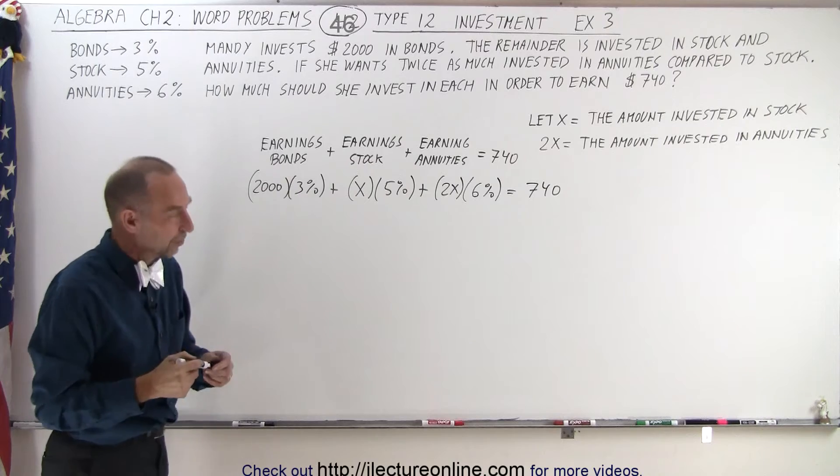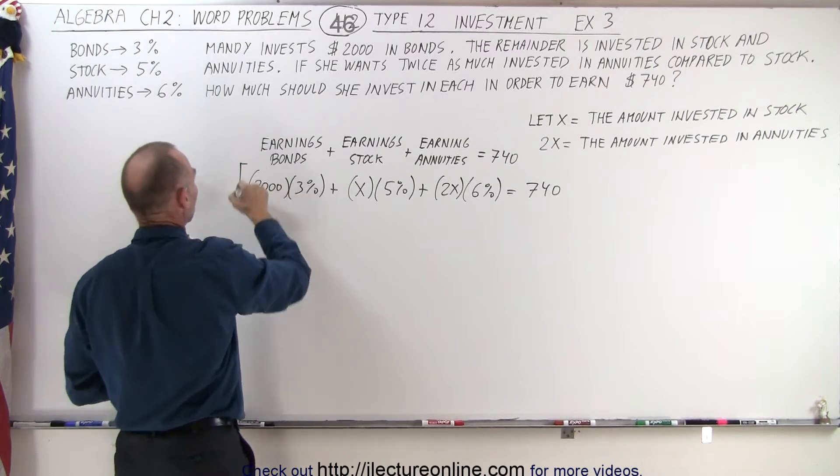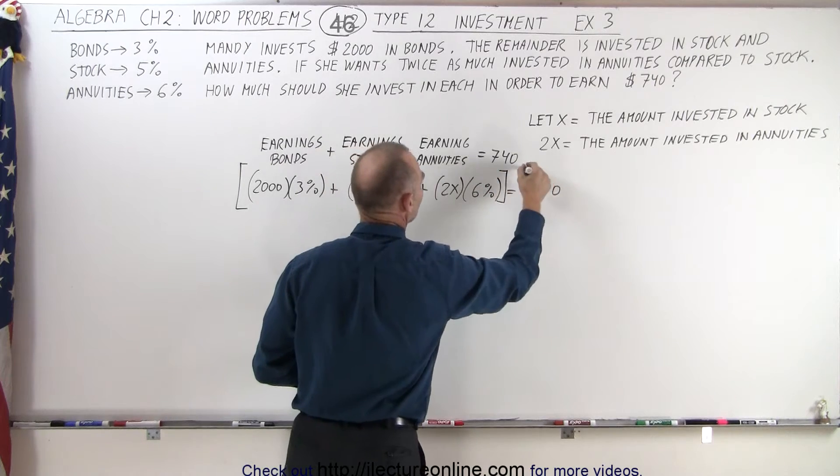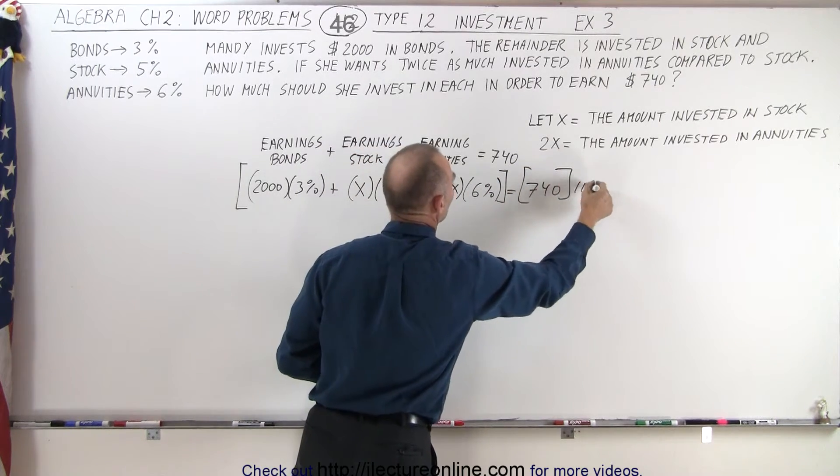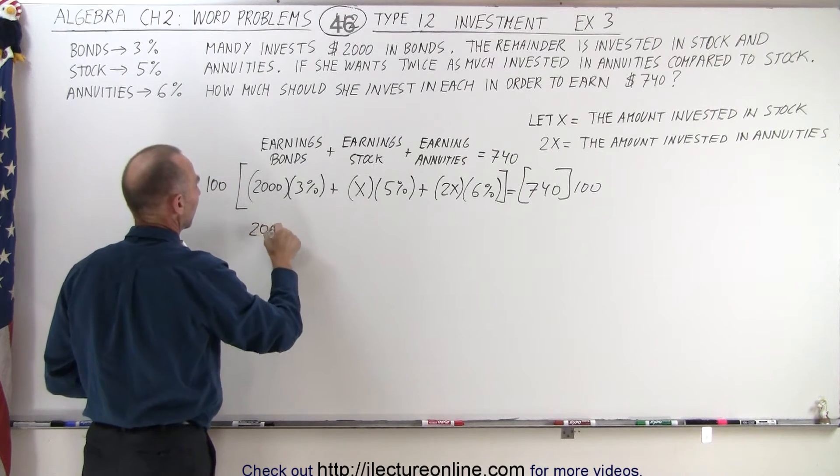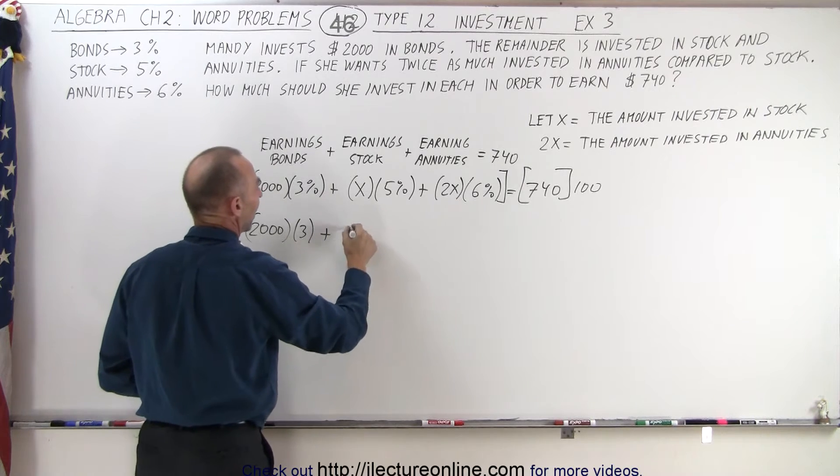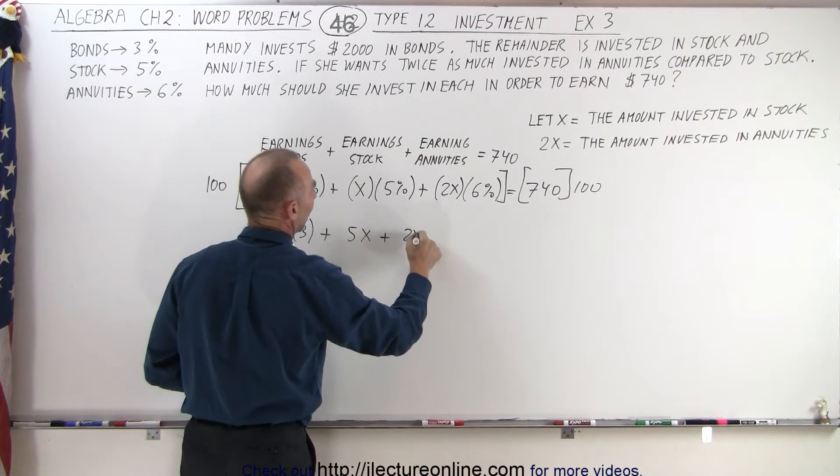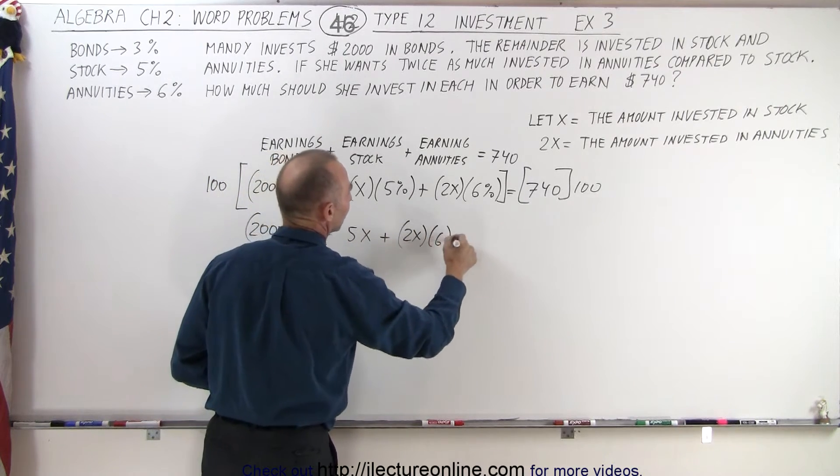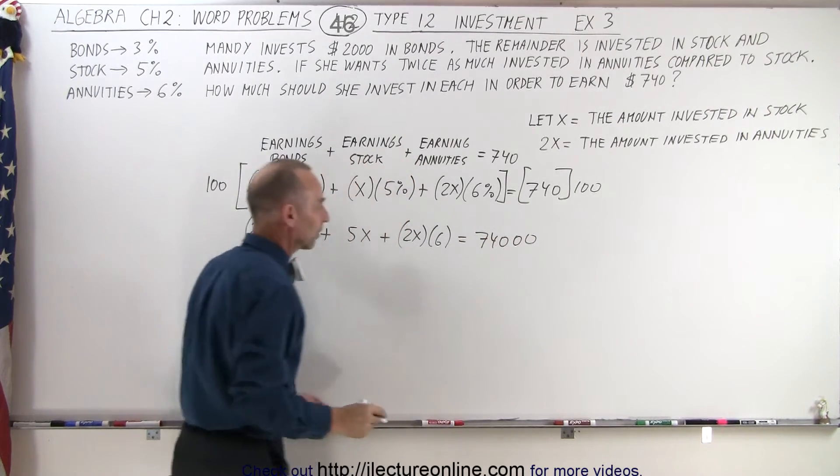So that is what gives us the ability to solve for X. The first thing we want to do is multiply both sides of the equation by 100 to get rid of the percentages. So in this case, we get 2,000 times 3 plus 5X plus 2X times 6 is equal to 740 with two more zeros, 74,000.